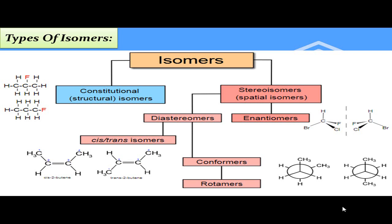Diastereomers ایک دوسرے کے mirror image نہیں ہوتے جبکہ enantiomers ہوتے ہیں۔ Cis-2-butene اور trans-2-butene کے دونوں structures کو ایک دوسرے پر رکھیں تو یہ non-superimposable ہوں گے — دونوں ایک دوسرے کے اوپر fit نہیں آئیں گے۔ اس کو ہم cis and trans isomers کہتے ہیں۔